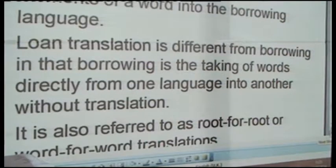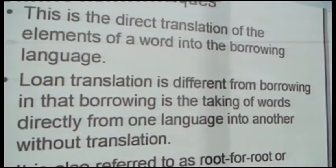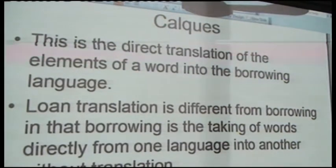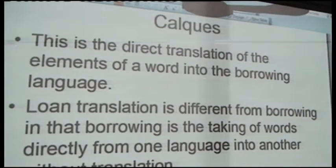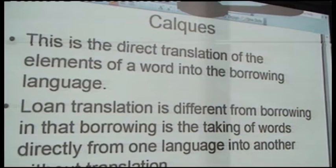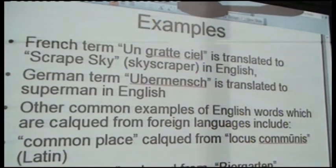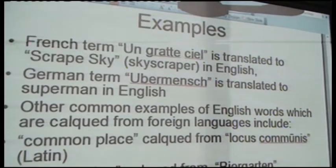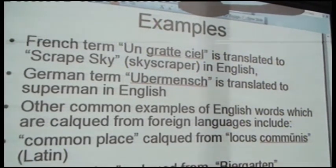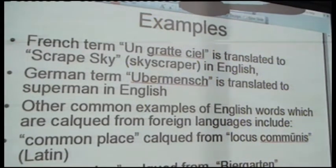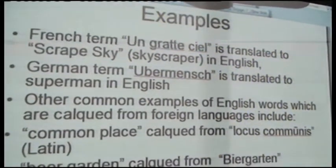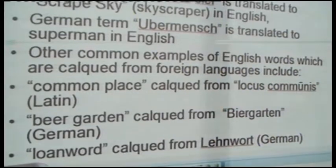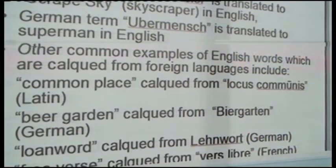Apart from back formation, we can talk about calque. Calque is a type of borrowing in which words are not just borrowed but translated — we refer to them as word-for-word or root-for-root translation. You borrow a word and then translate it using items you have in your own language. Examples in English include 'skyscraper' translated from the French 'gratte-ciel,' 'Superman' from the German 'Übermensch,' and 'commonplace' which is a calque from the Latin 'locus communis.'